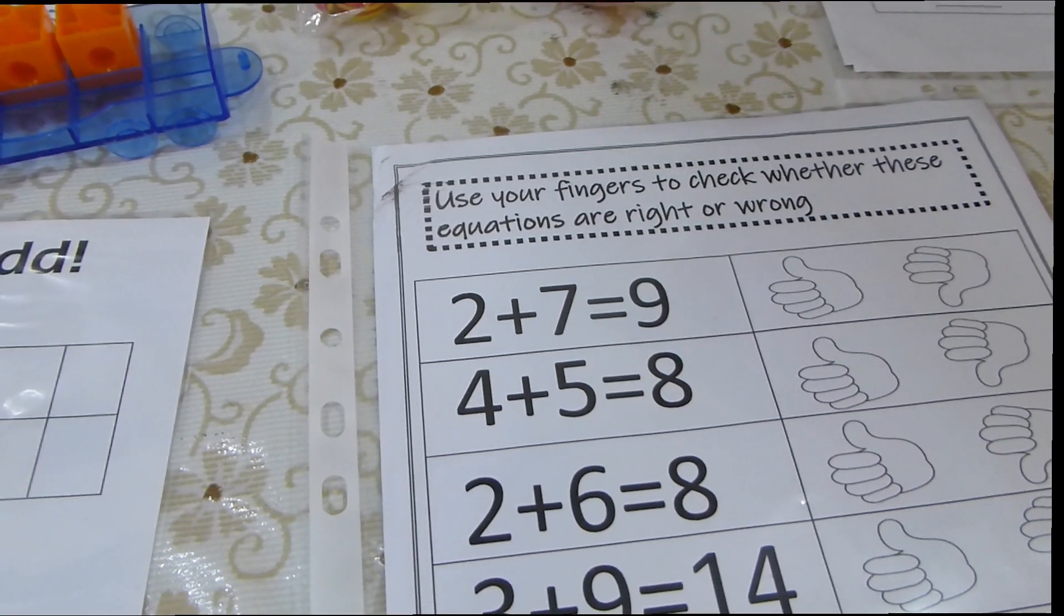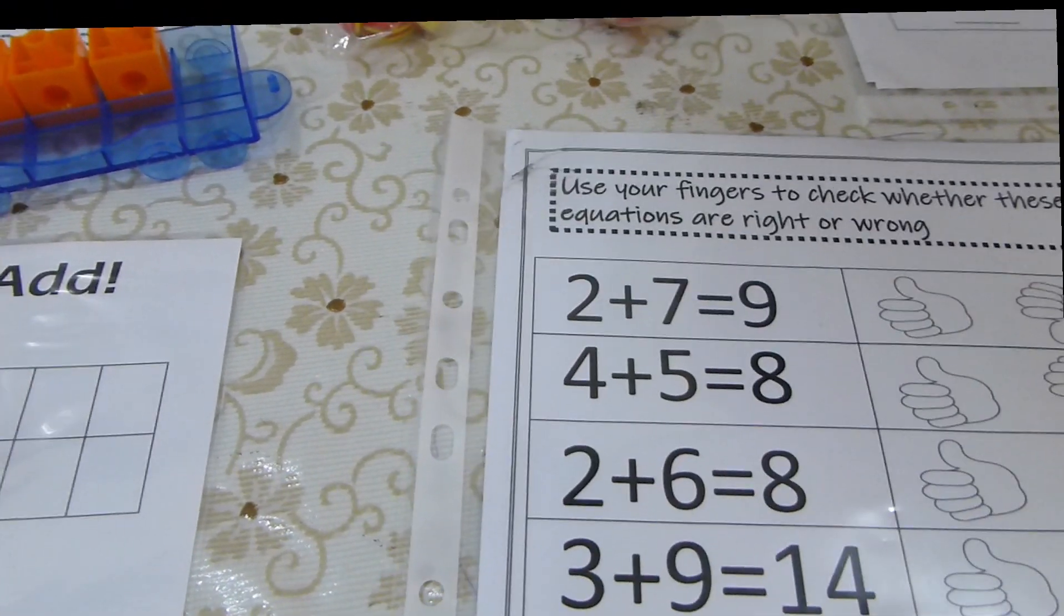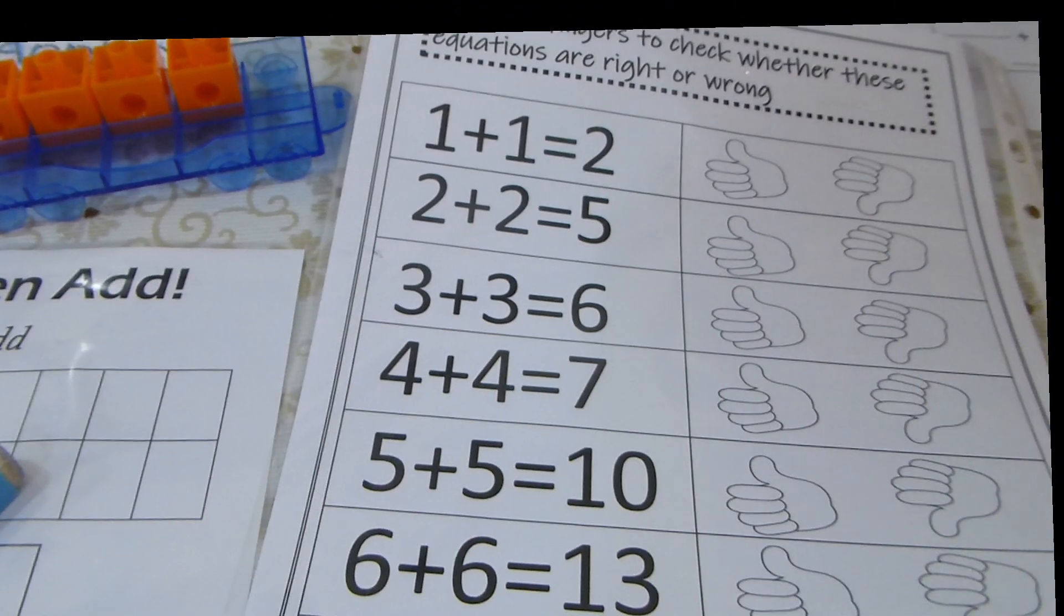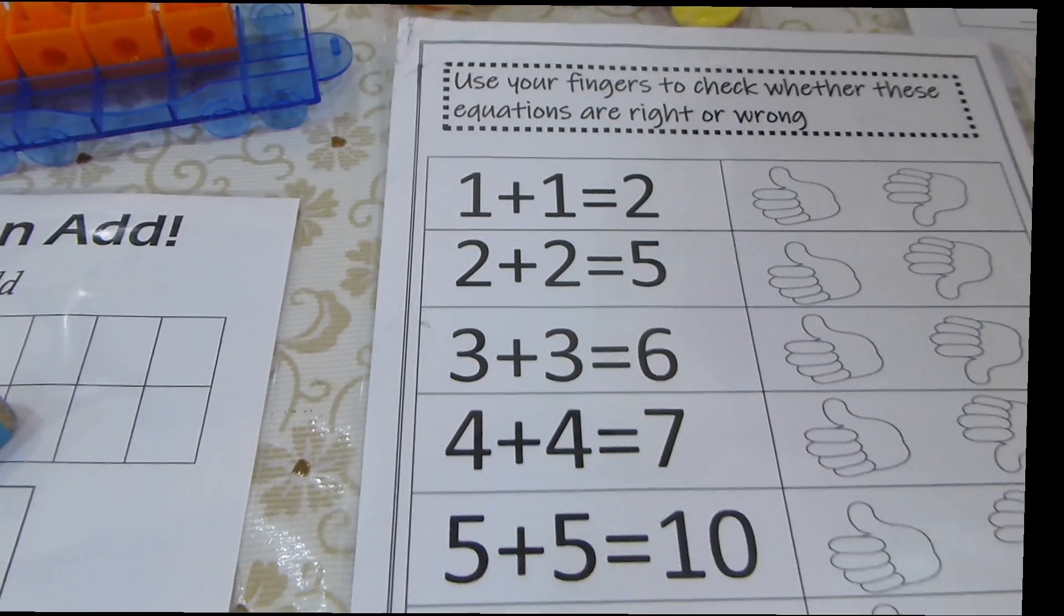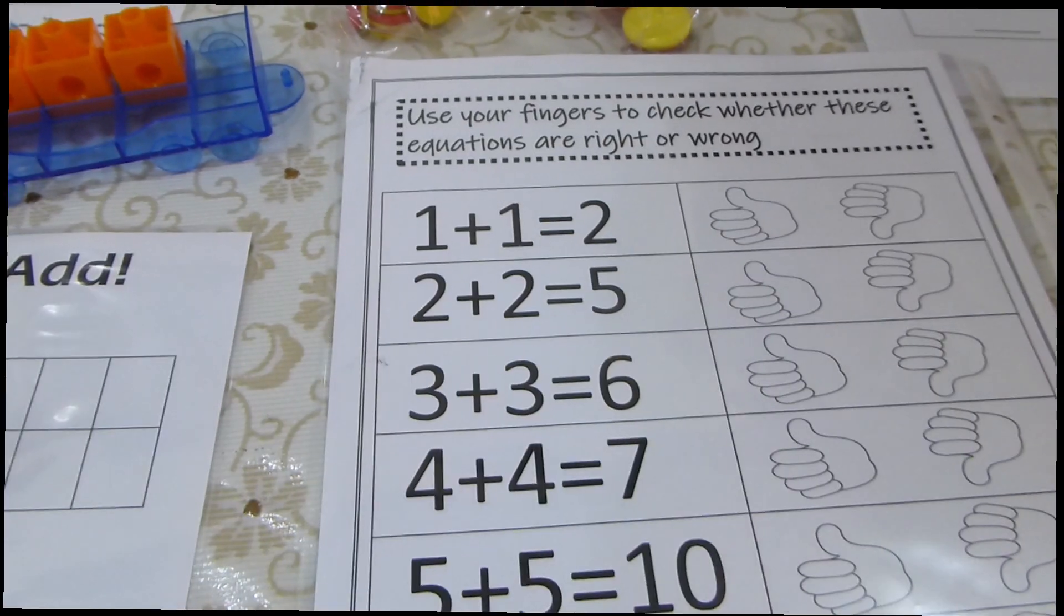In this document, you will find the first one with different equations, but here you will find the doubles. So 1 plus 1 equals 2. Yes, 1 plus 1 equals 2 thumb up.